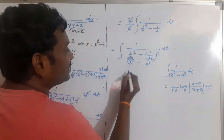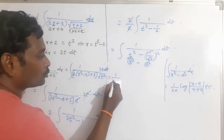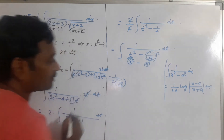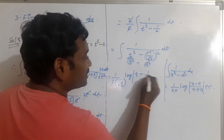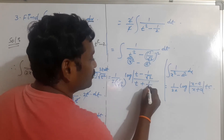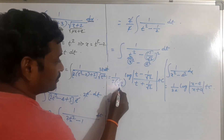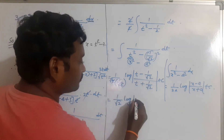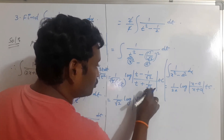Here x corresponds to t and a = 1 by root 2. According to this formula, the integration becomes 1 by (2 times 1 by root 2) times log mod (t minus 1 by root 2) by (t plus 1 by root 2) plus c. Simplifying, 2 times 1 by root 2 gives root 2. Taking LCM inside the log: root 2 times t minus 1 divided by root 2 times t plus 1, with root 2 cancelling.